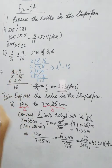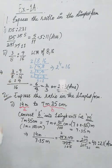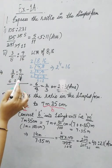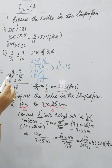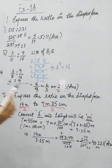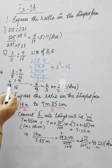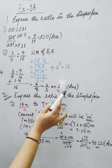We equate the consequent by making the base 16. So 3/8 becomes 6/16 and 9/16 stays as 9/16, giving us 6:9, which simplifies to 2:3. The answer for the second part is 2:3.